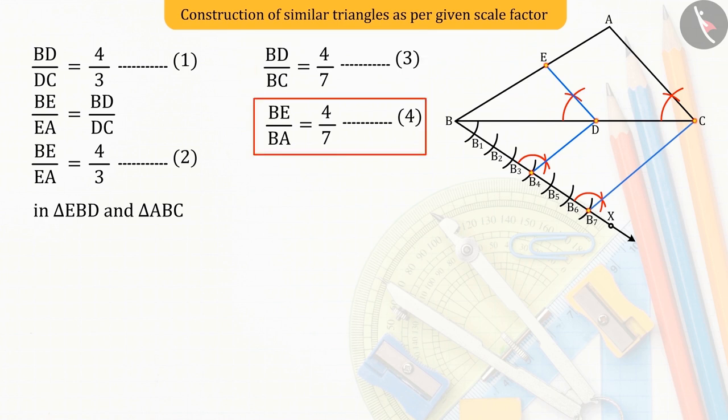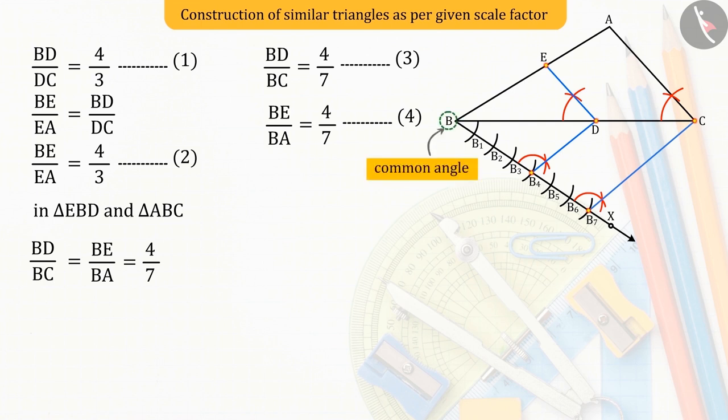So, from equation 3 and 4, we get BD upon BC equals BE upon BA, which is 4 upon 7. Also, angle B is the common angle.